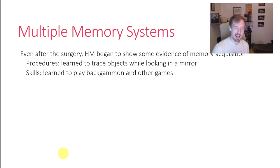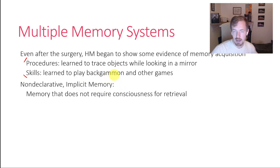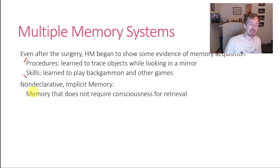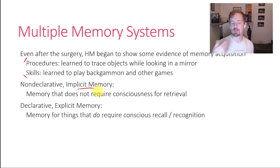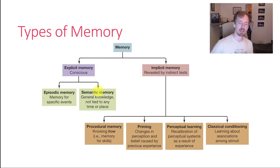After his surgery, HM was able to show some evidence of memory acquisition, confined to procedures and skills — things like muscle memory or perceptual knowledge about how something works. He was able to learn to play backgammon and other games, even though when asked he would say 'I have no memory of that, I've never played backgammon in my life.' We now know this as implicit memory, or non-declarative memory — any kind of memory that does not require consciousness for retrieval. If you can show it, it's usually implicit; if you can talk about it, it's probably explicit.